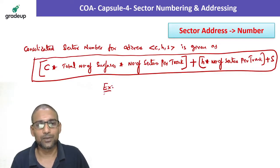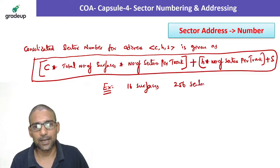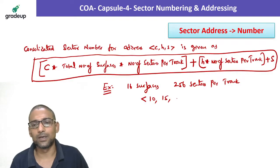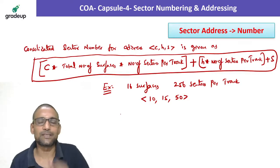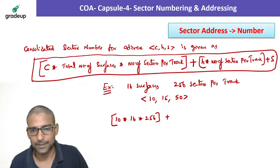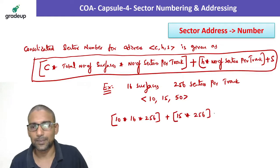For example, you are given there are 16 surfaces, 256 sectors per track. What is the sector number for 10, 15, 50. Substitute, 10 into C into number of surfaces, 16, number of sectors per track, 256 plus H, 15 into number of sectors per track, 256 plus S, 50.